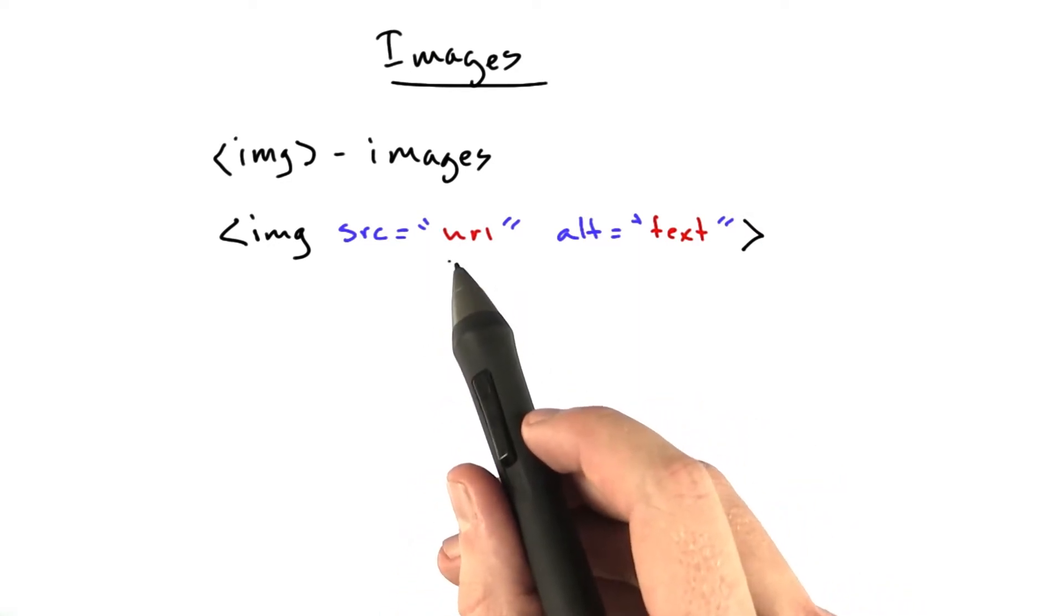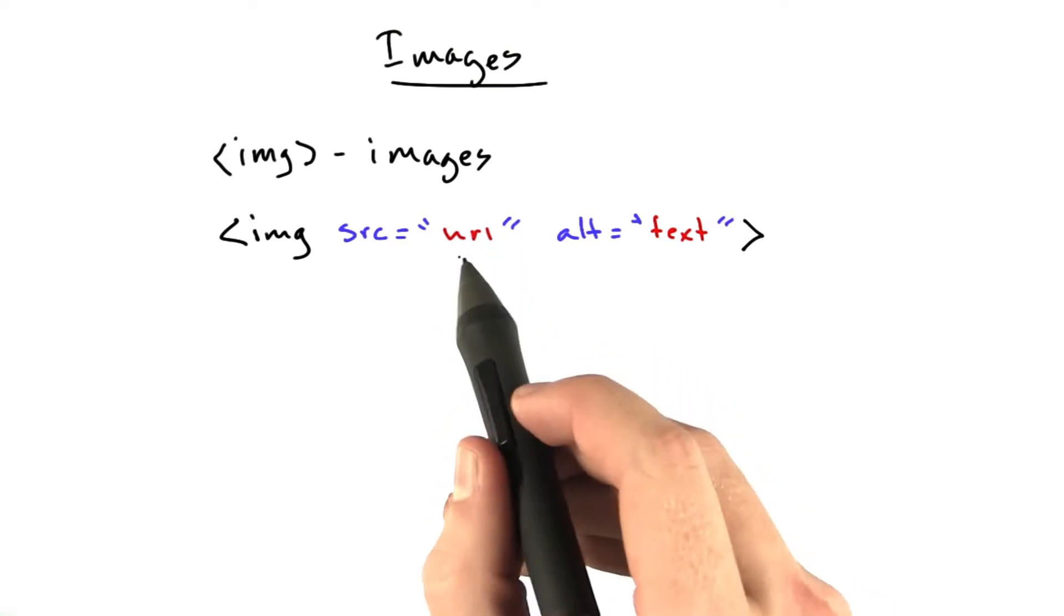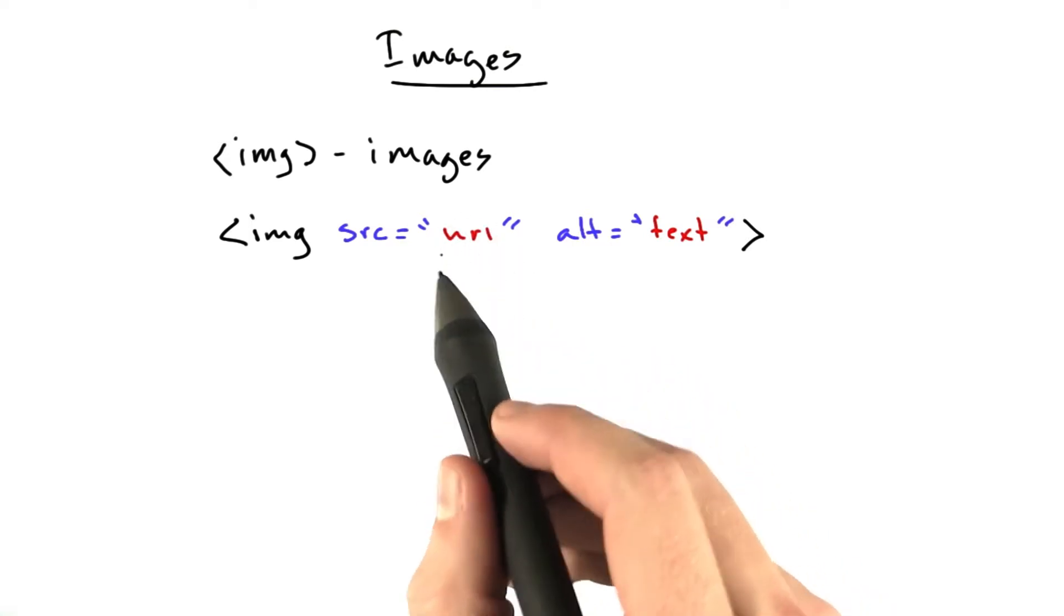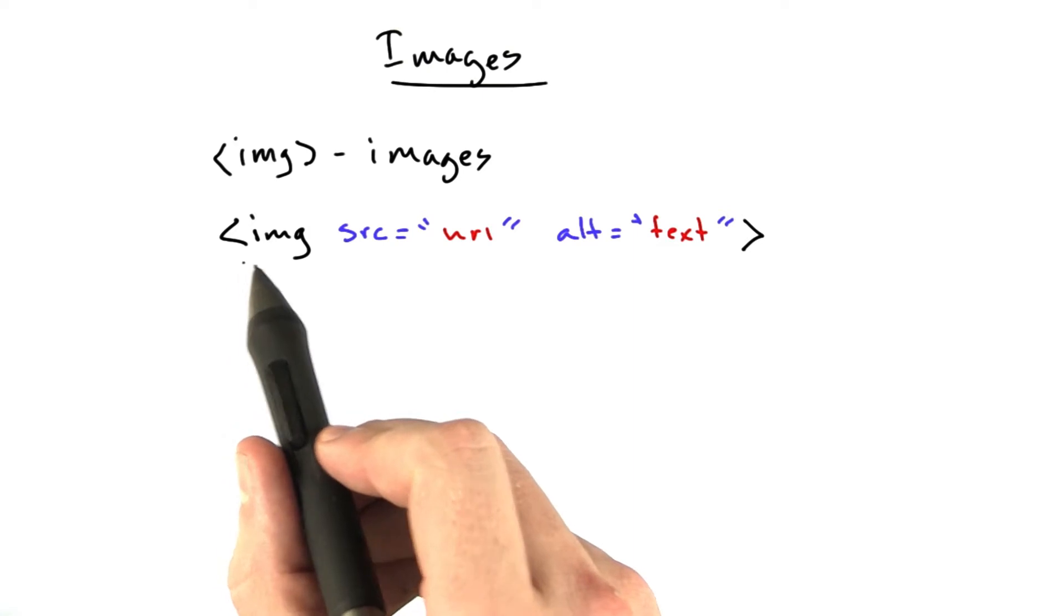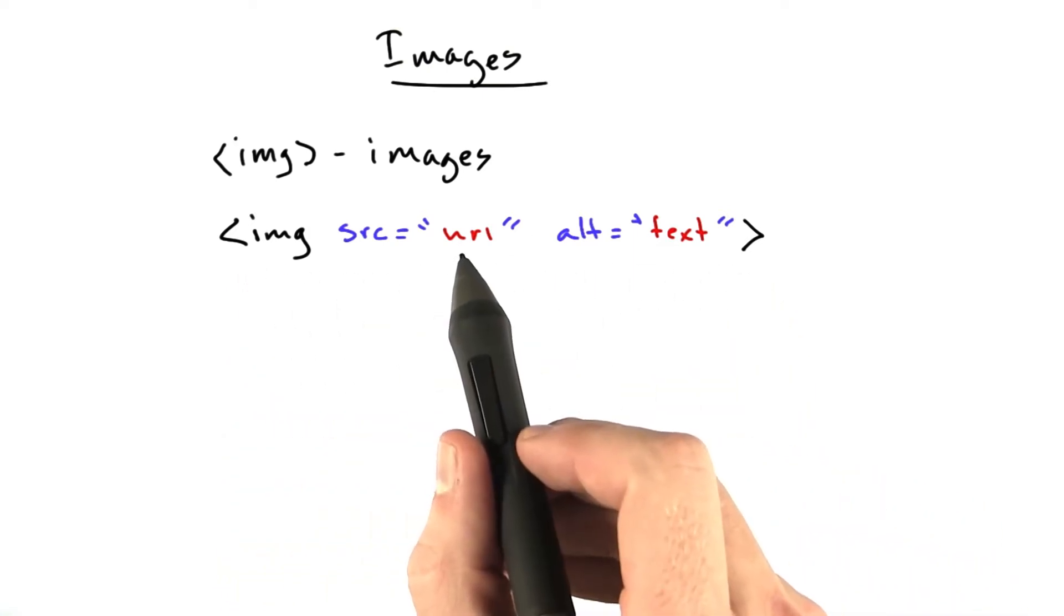Remember, we talked about how web servers can serve all sorts of different types of content. If you're going to serve an image, this is how you would do it. You would include it in an image tag in HTML and you reference the URL.